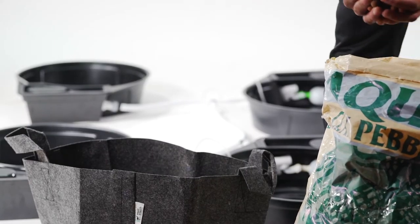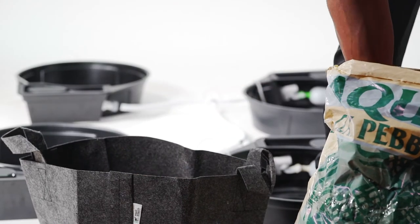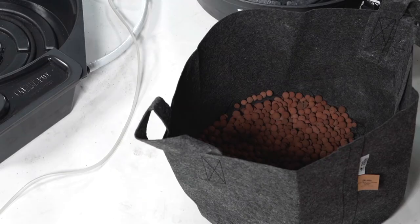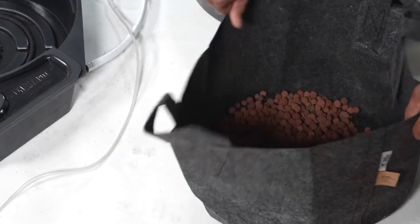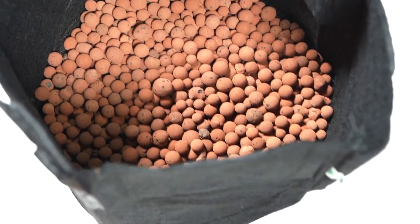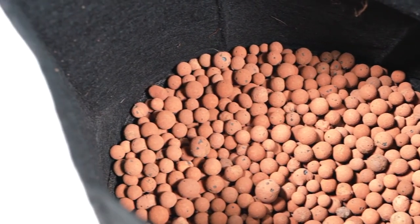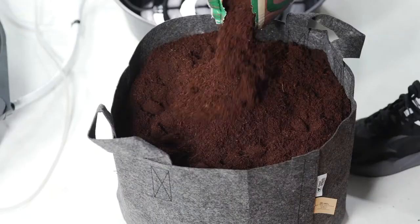After setting up the air ring, fill your fabric pots with a thin layer of pebbles at the base to prevent the growing medium from being overwatered. The pebbles will act as a drainage system and protect the plant's roots.